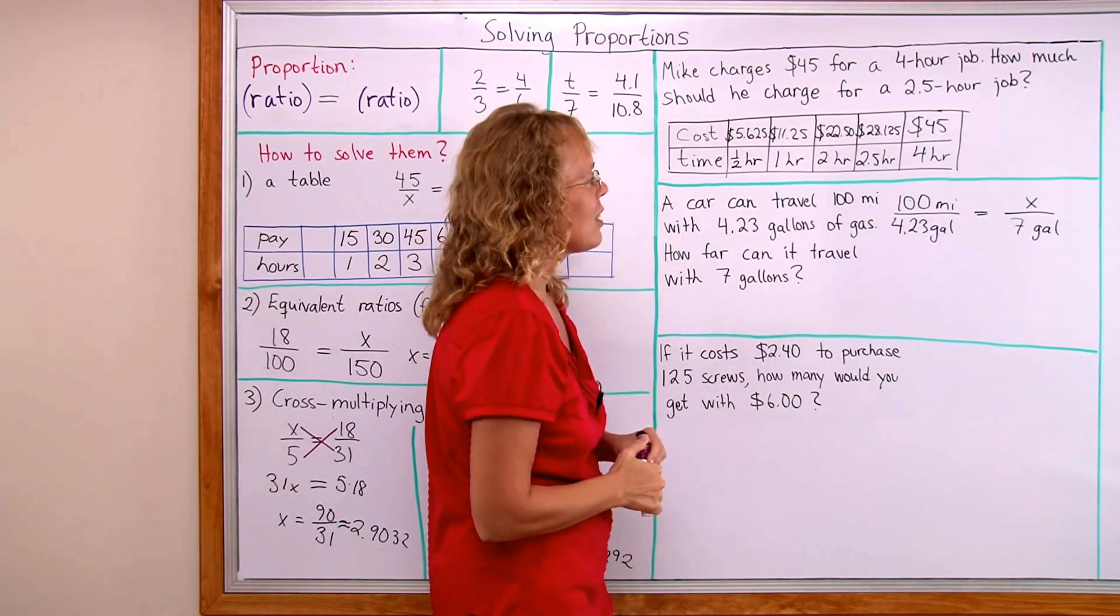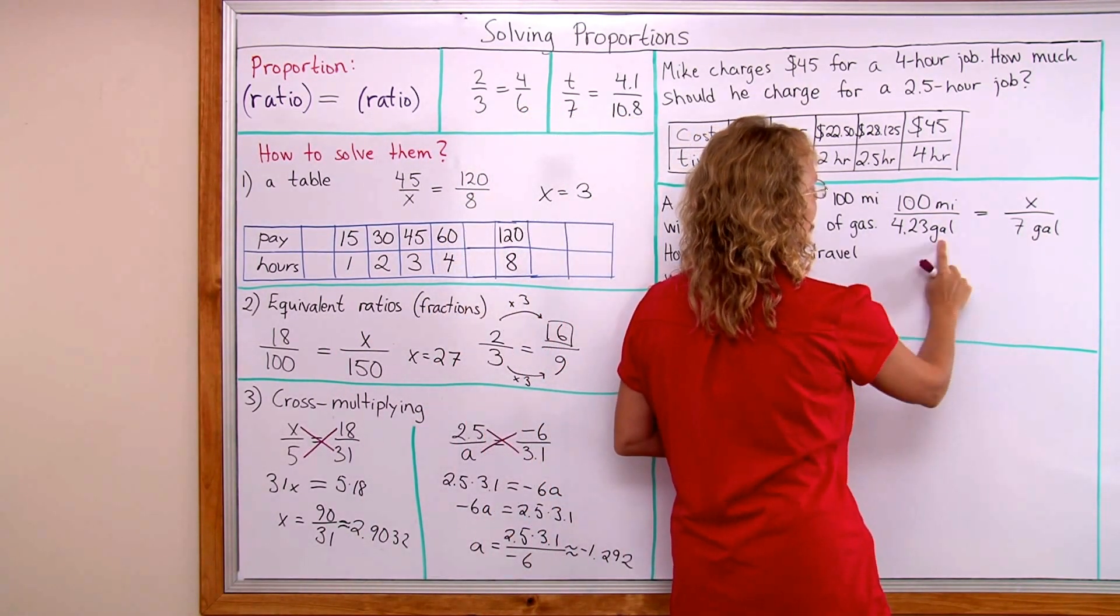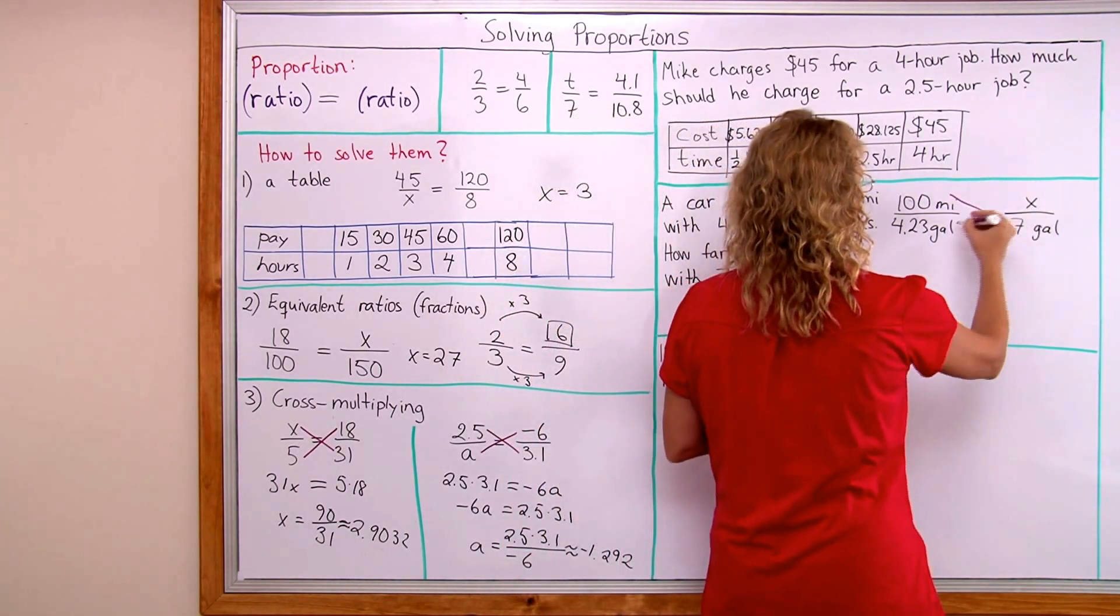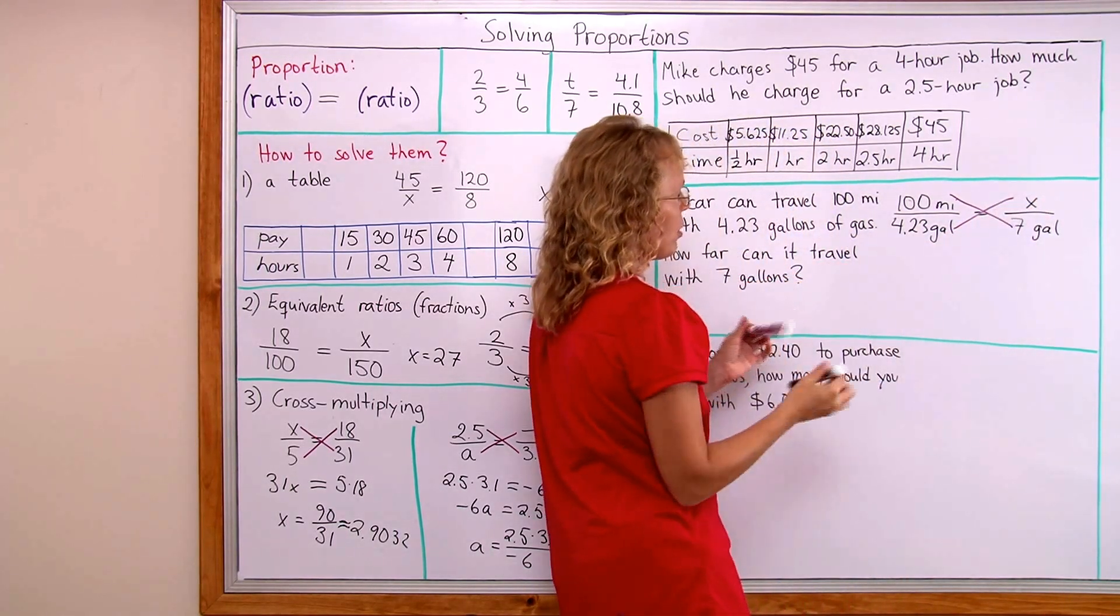That's my setup for the proportion and this step is very very important that you set it up right. Because if you don't then you will get the answer wrong. Notice that the gallons, in both cases, the gallons are in the denominator. Now I cross multiply. Okay? My unknown gets multiplied by four point two three.